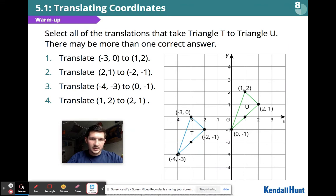Number 3 says translate negative 4, negative 3 to 0, negative 1. Yeah, that works. Our rule is to translate T to U, not U to T. Same vertices, same shape, doesn't change it, rotate it, reflect it, or grow it. Exact same vertices. Yes, that one works.